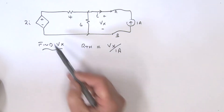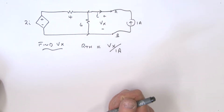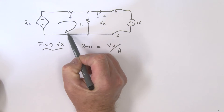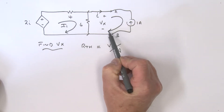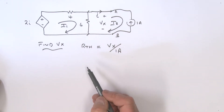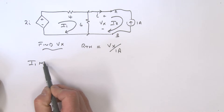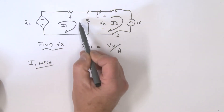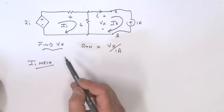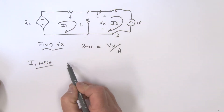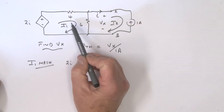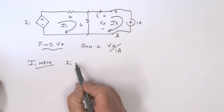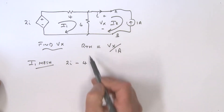Now, how do we solve this problem? I could define mesh currents — I'll call this mesh I1 and this mesh I2. Let's look at the I1 mesh going clockwise, summing voltages. Going from minus to plus through the dependent source gives 2I, then a drop across the 4-ohm resistor is minus 4 times I1.